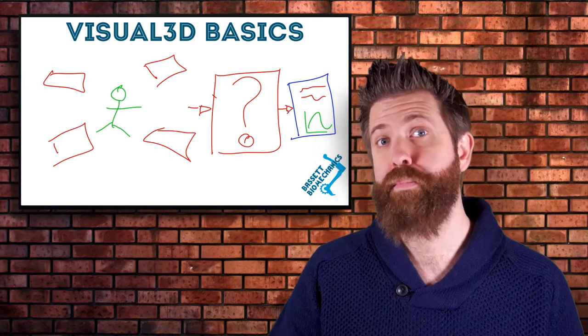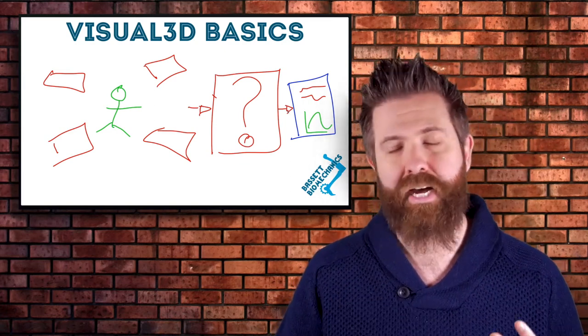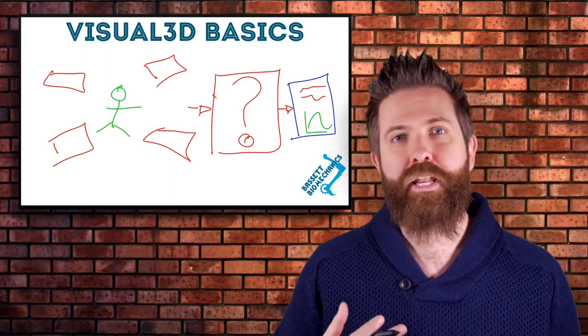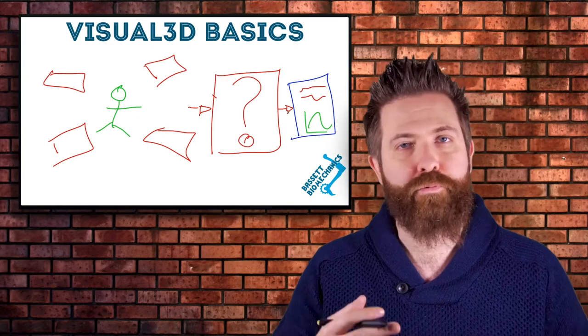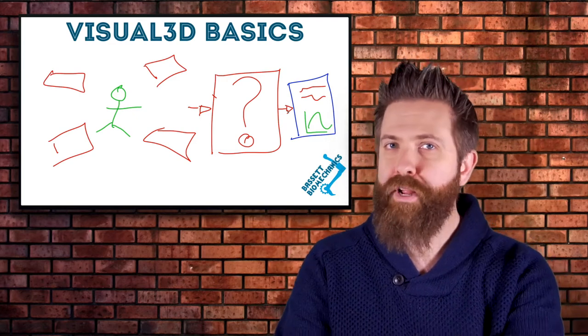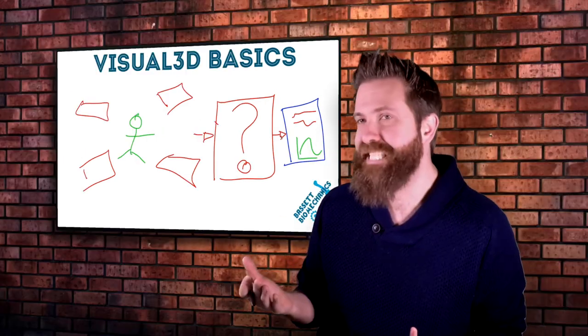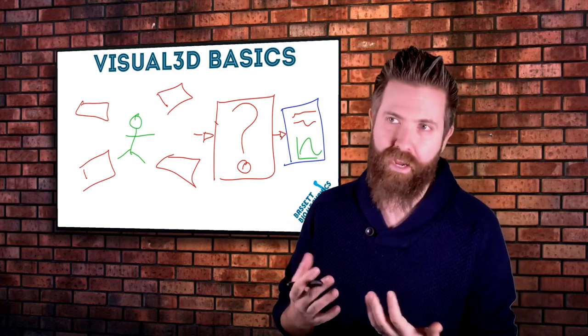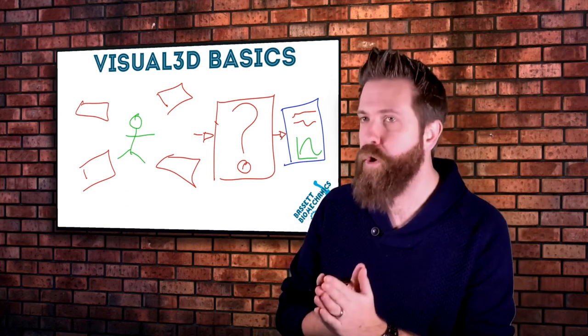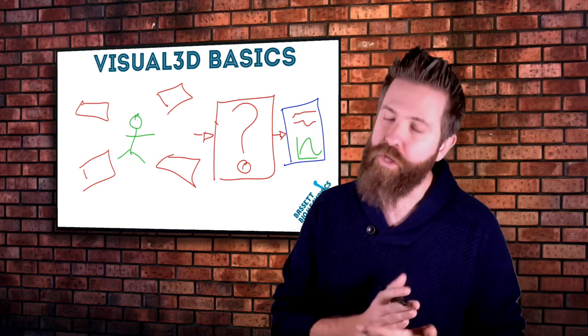Additionally, we want to be confident in that data, as anybody can use Excel or MATLAB to play around with some numbers and get something out. But how do you know that that is the correct joint angle? How do you know that the joint moment is exactly what you wanted?